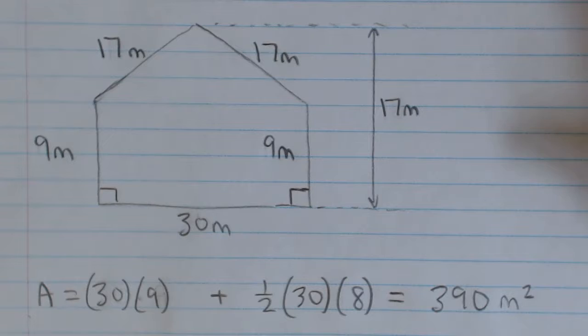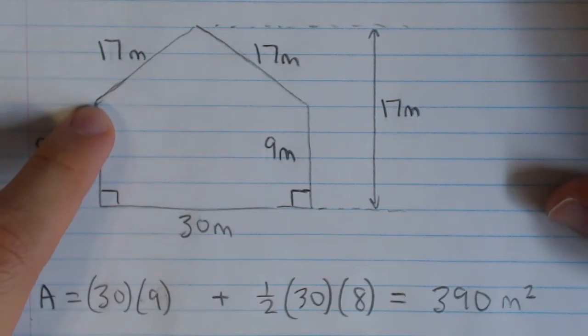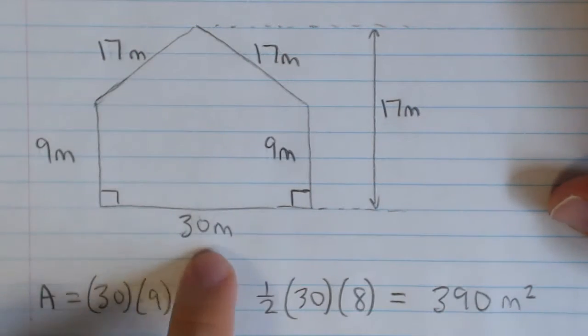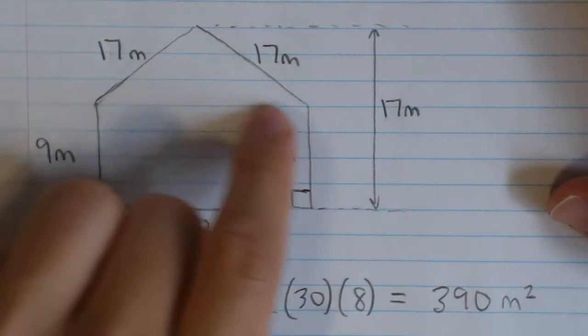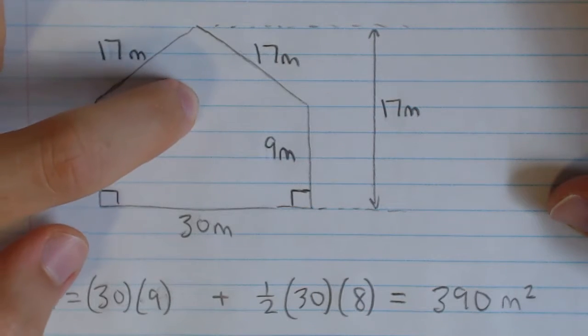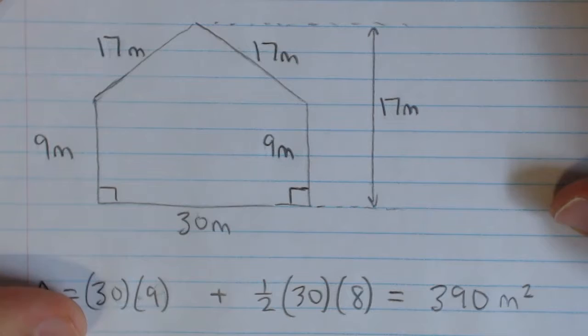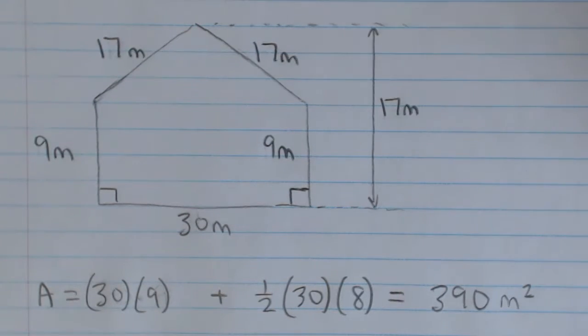And for the area of the triangle, remember it's 1 half times the base times the height. That's the one way to calculate the area of a triangle. And you can see we have the base, because this length right here is the same as this length, so it's 30 meters. But the height, that's this distance right here.